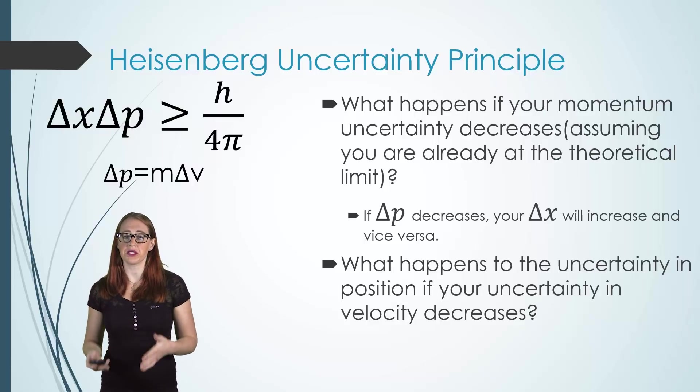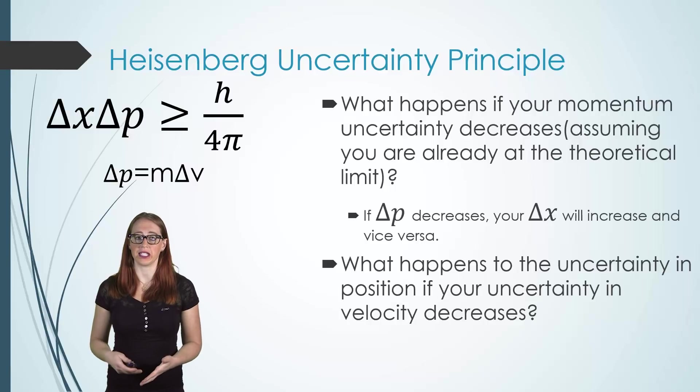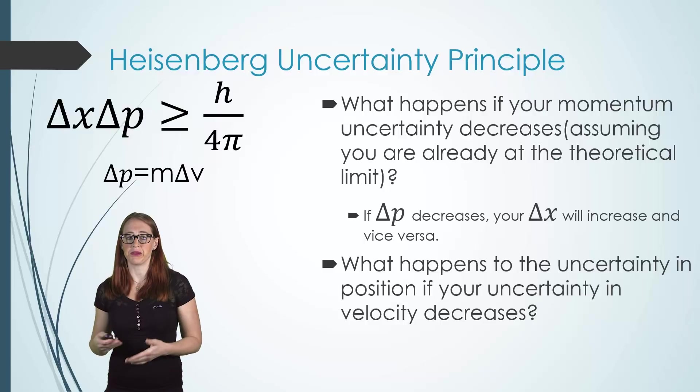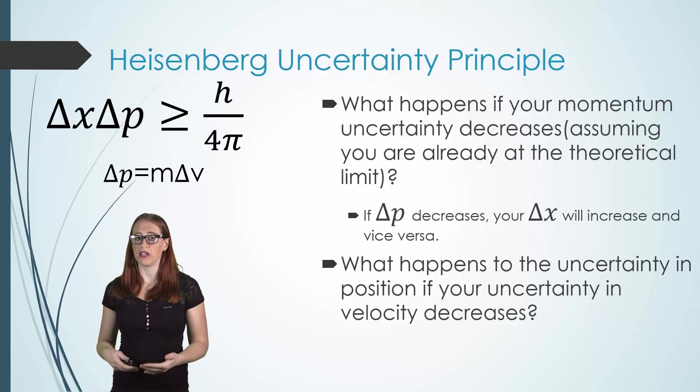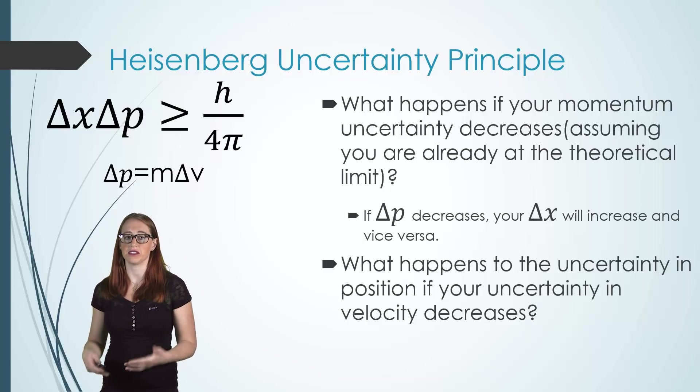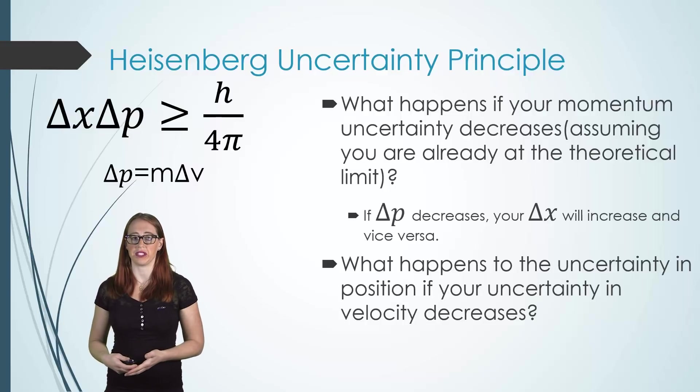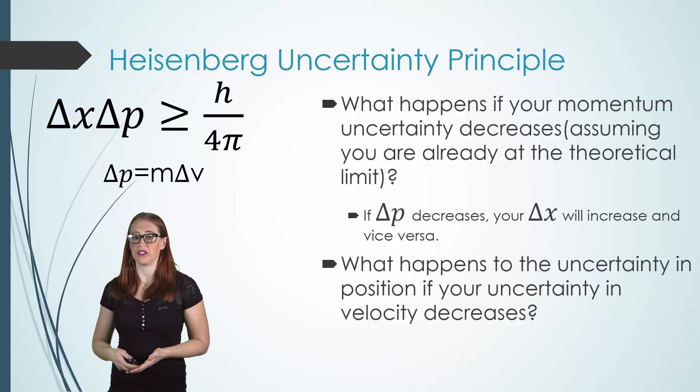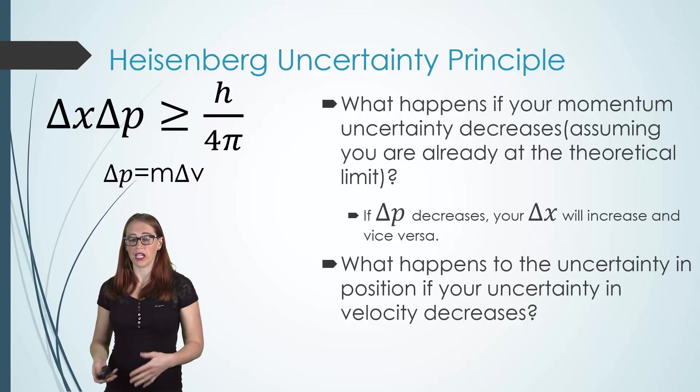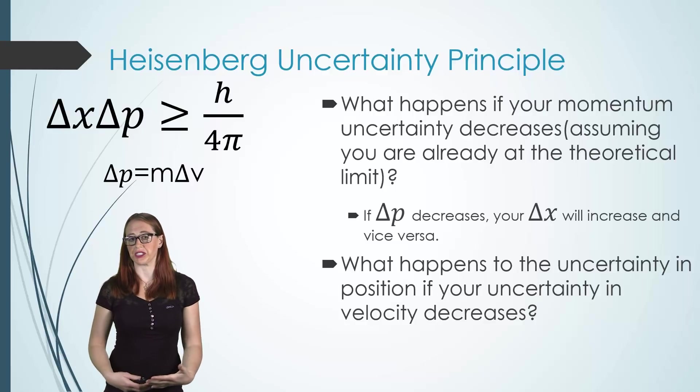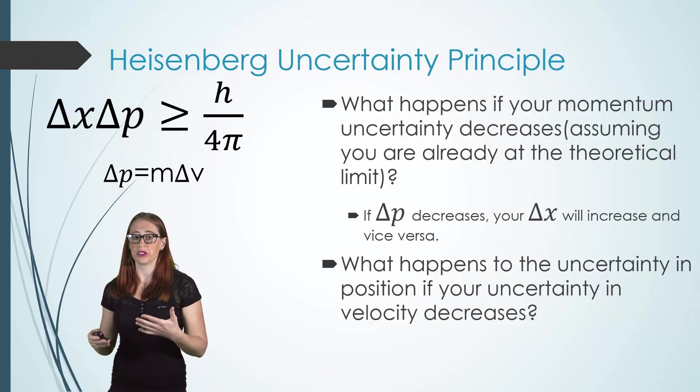Now similarly, because most of the times we know our mass with great certainty, we can do the next question. Here I'm asking what happens to the uncertainty in position if your uncertainty in velocity decreases, with that same assumption that you're near the theoretical limit. As you know your velocity with more certainty, you're going to know your momentum with more certainty, and therefore your uncertainty in x will also increase.